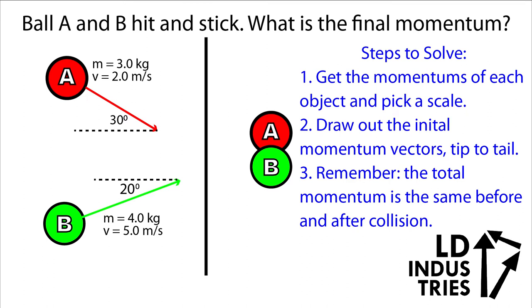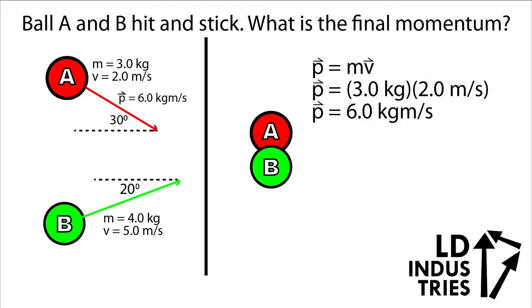First, we'll figure out the momentum of each object, and then we'll draw out the momentum vectors. We'll need a scale to do that. We'll put those momentum vectors tip to tail, and then use the conservation of momentum concept to solve the problem.